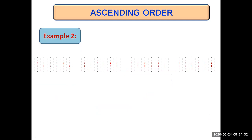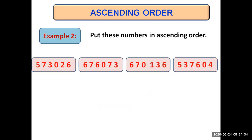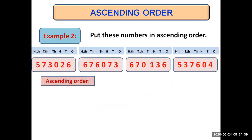Let's have another example putting numbers in ascending order. After mentioning their place values, we start comparing from the largest place value, which is 100,000. We see that the first and last number have five at 100,000 place, whereas the second and third numbers have six. Five is smaller, but the first and fourth numbers are not the same.